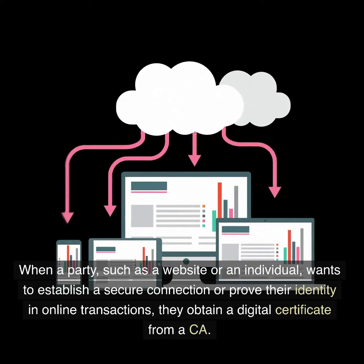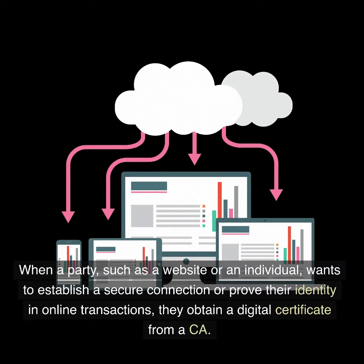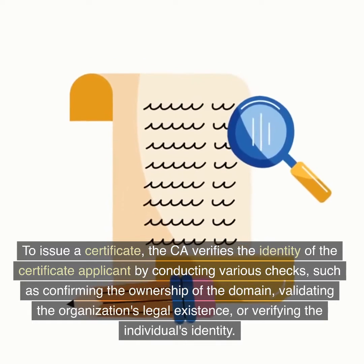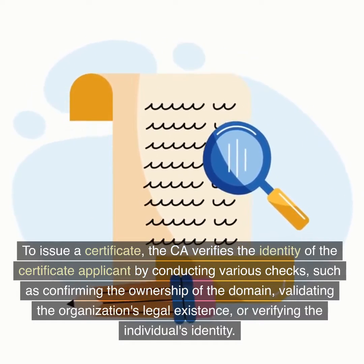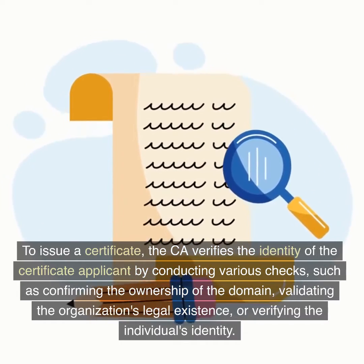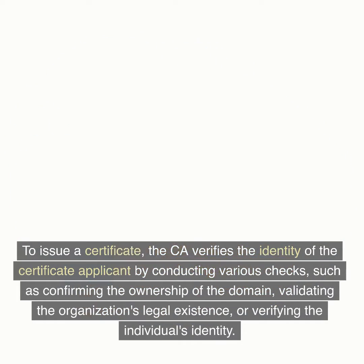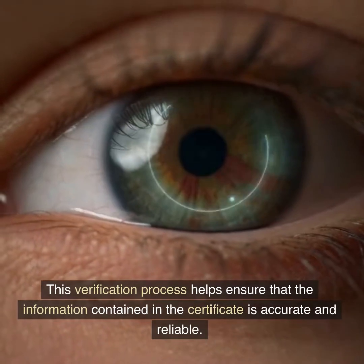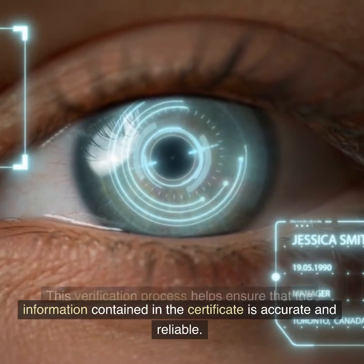When a party, such as a website or an individual, wants to establish a secure connection or prove their identity in online transactions, they obtain a digital certificate from a CA. To issue a certificate, the CA verifies the identity of the certificate applicant by conducting various checks, such as confirming the ownership of the domain, validating the organization's legal existence, or verifying the individual's identity. This verification process helps ensure that the information contained in the certificate is accurate and reliable.